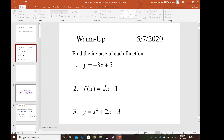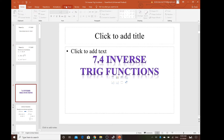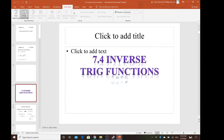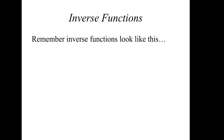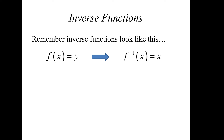Now let's start section 7.4: inverse trigonometric functions. For the inverse function, remember f of x equals y, so the inverse of f of x — the negative one is not the exponent, it's just an indicator for the inverse. So the inverse of f of x equals x; we just swap the x and y variables.